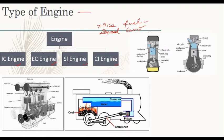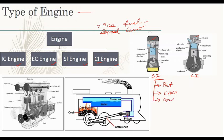That's why we have two main types: IC engine (internal combustion engine) and EC engine (external combustion engine). Based on combustion, we also have SI engine — spark ignition. For example, this is a spark block, this is an injector. The SI engine — classic examples are petrol engine, CNG engine, gas engine, and LPG engine. These are all spark ignition engines.